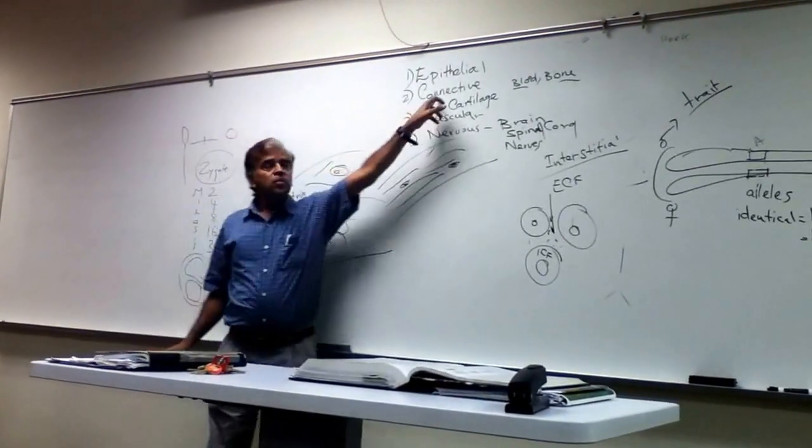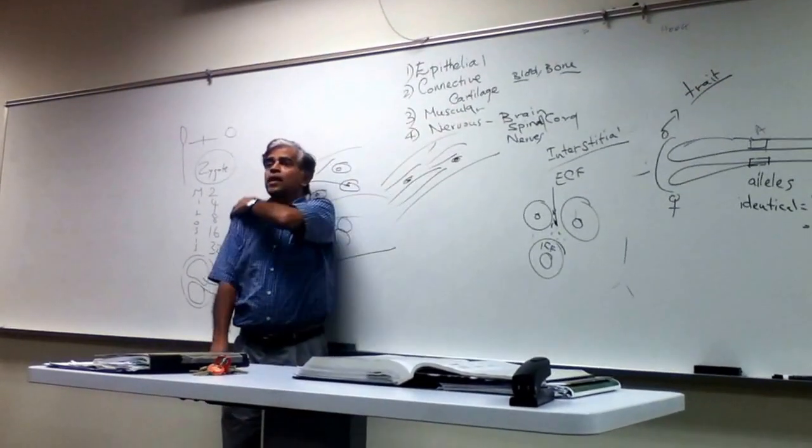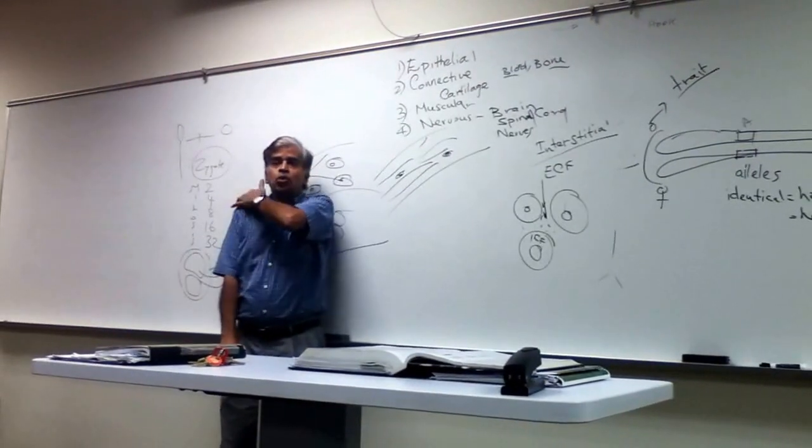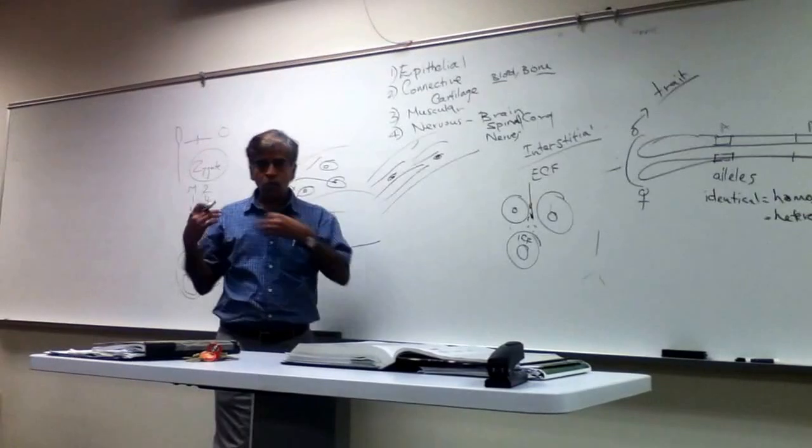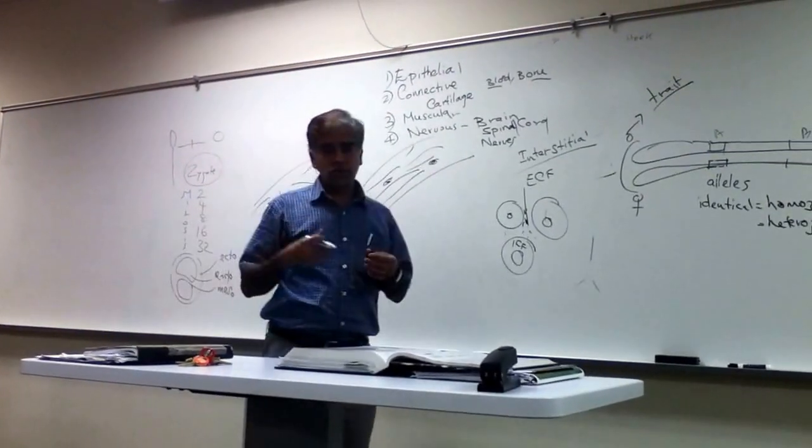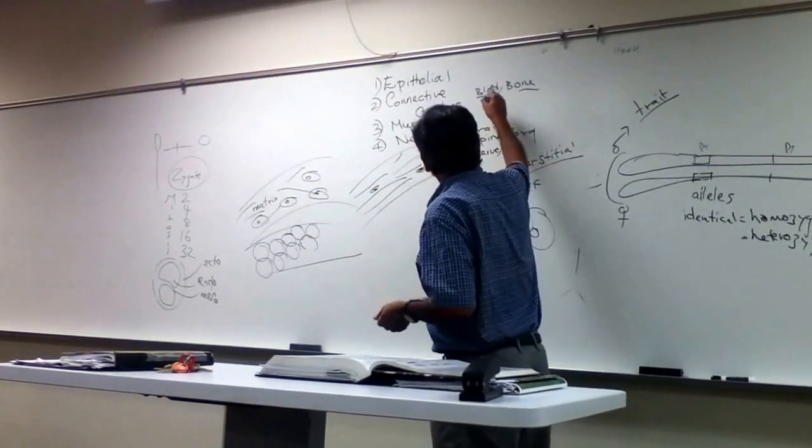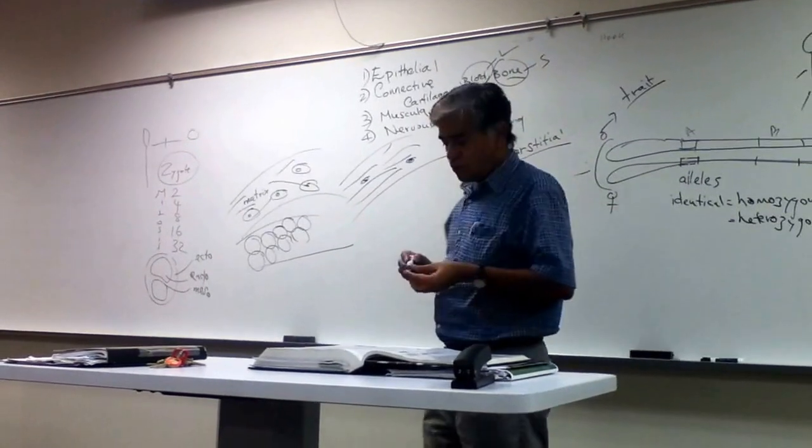So you have four major categories of tissues. But connective tissue within that you have another one which we call cartilage that joins your bones in the joints. It's like ropes tying the bones together. Blood and bone are also considered as connective tissue. This is liquid form. This is solid form.